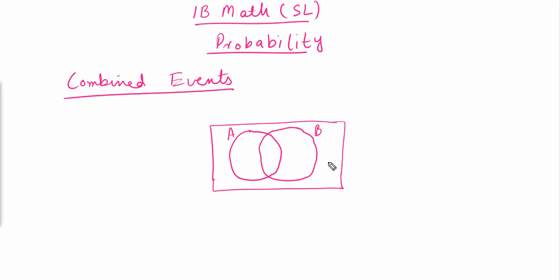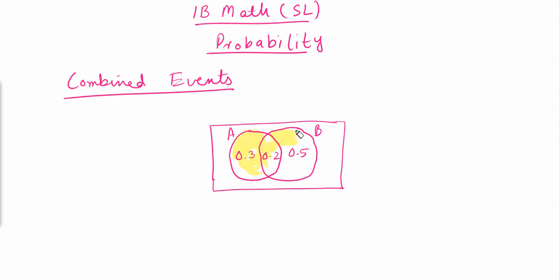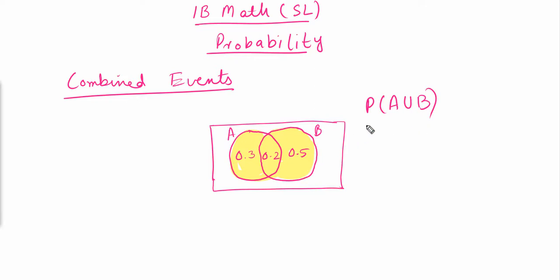The probability of event A is 0.3, the probability of event B is 0.5, and the probability that both events happen is 0.2. To write the combined probability of A and B, we represent it as P(A ∪ B) — the probability of A union B — which covers the whole shaded region of both circles.